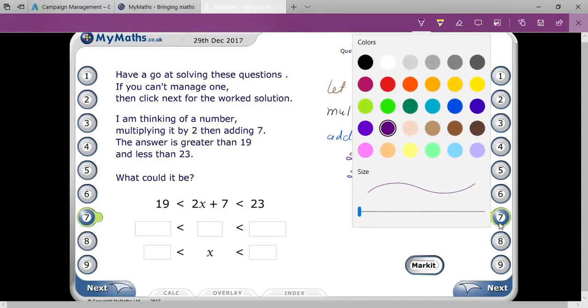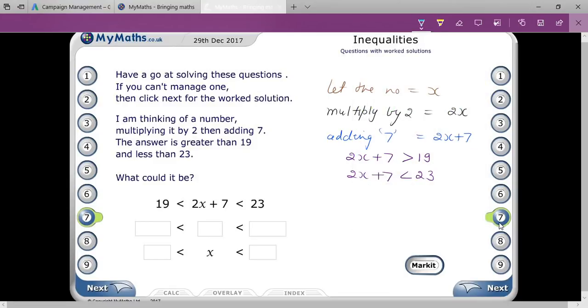Two conditions will be there. First condition is 2X + 7 > 19, and next condition is 2X + 7 < 23. So as I told you, the less number will be on your left hand side, so 2X + 7 > 19 you can also write as 19 < 2X + 7.